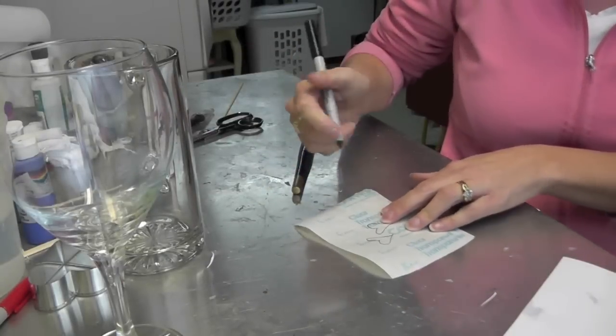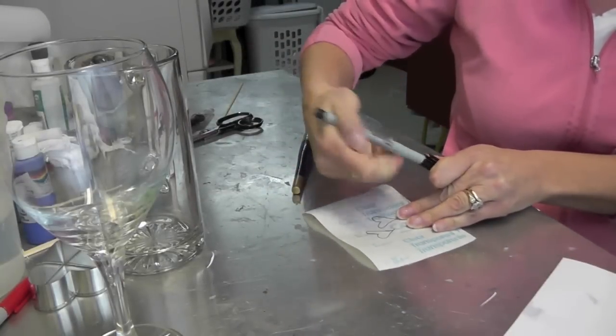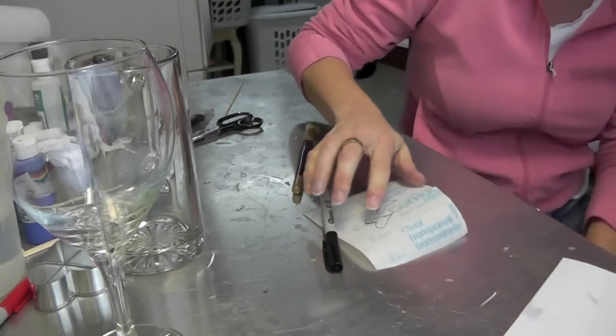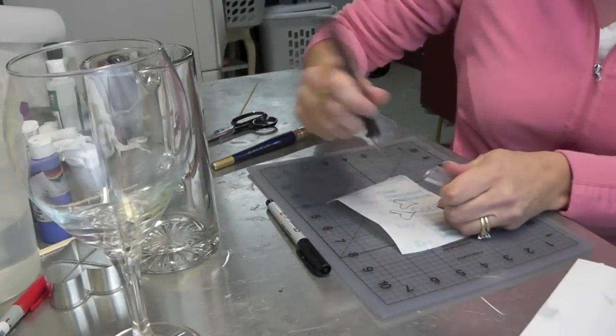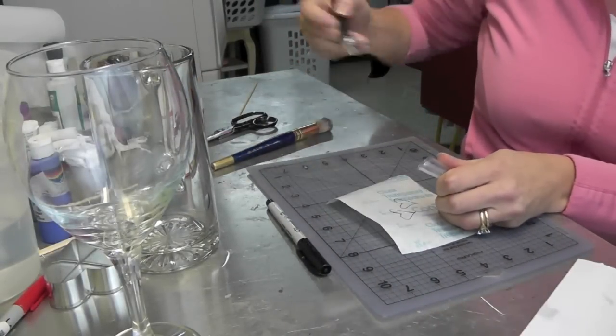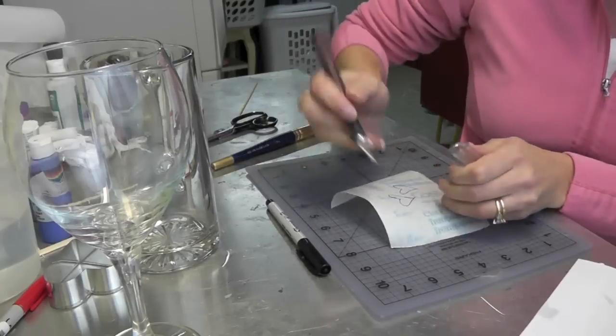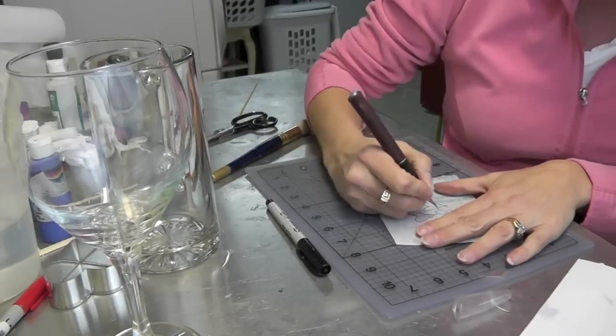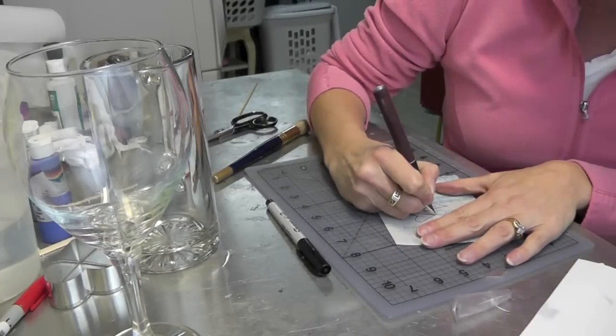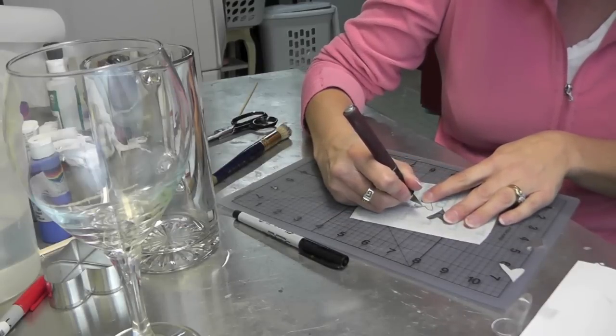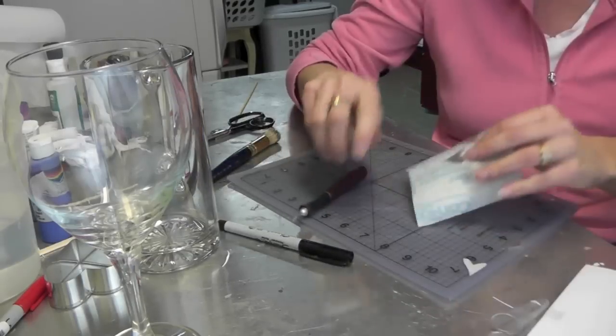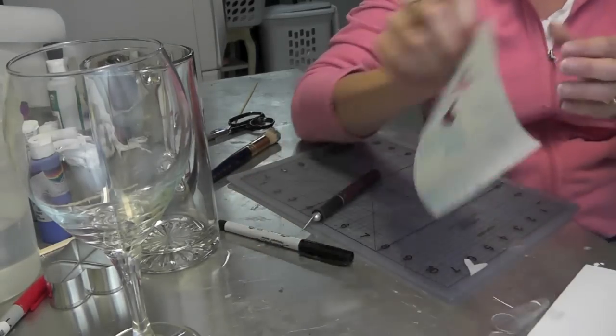Once you have it traced on, you want to cut it out. You want to protect the surface that you're cutting on, and you're going to take a craft knife or X-Acto knife. You want to just cut out the hearts, and you do want to be neat about cutting them out because this is going to be your stencil. And there it is.